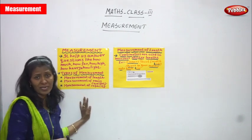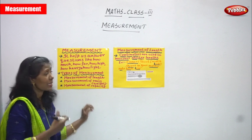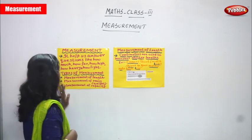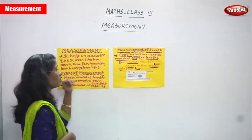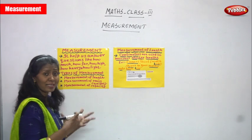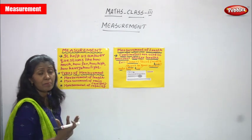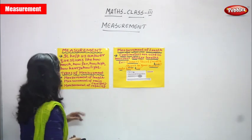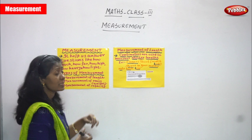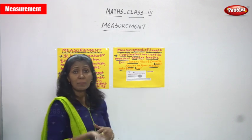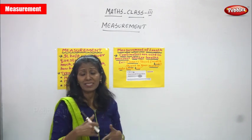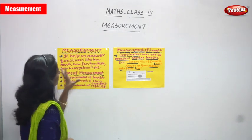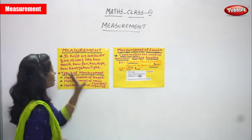Mass means nothing but weight. Light things come under gram, and heavy things always come under kilogram. For example, my weight comes under kilogram. So this is the basic concept of measurement.